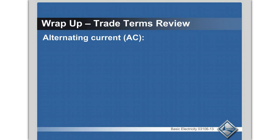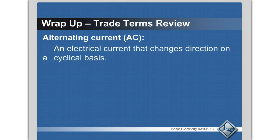Alternating current — what does that stand for? AC. Electrical current that changes directions on a cyclic basis. That means the current is reversing directions at a cyclic rate, and that is 60 cycles per second for US voltage and power supplies.